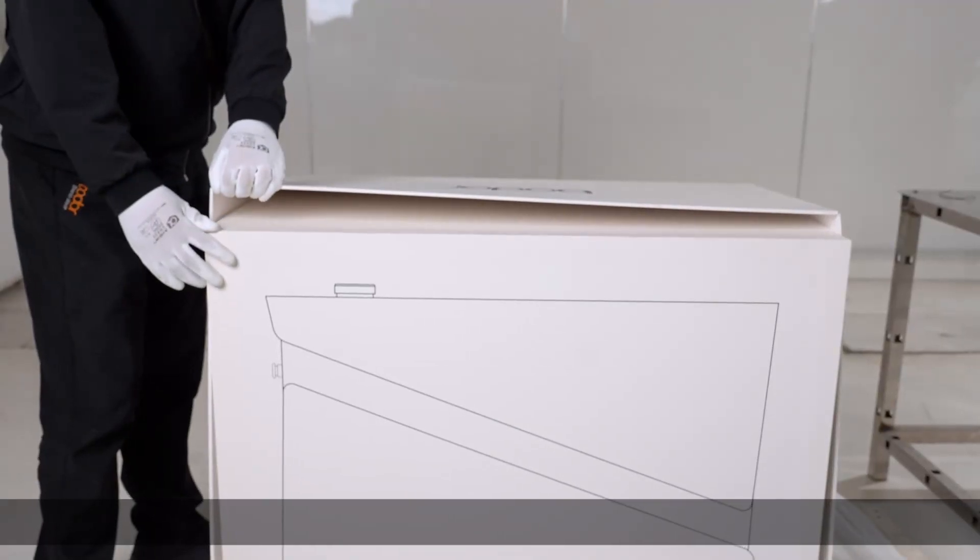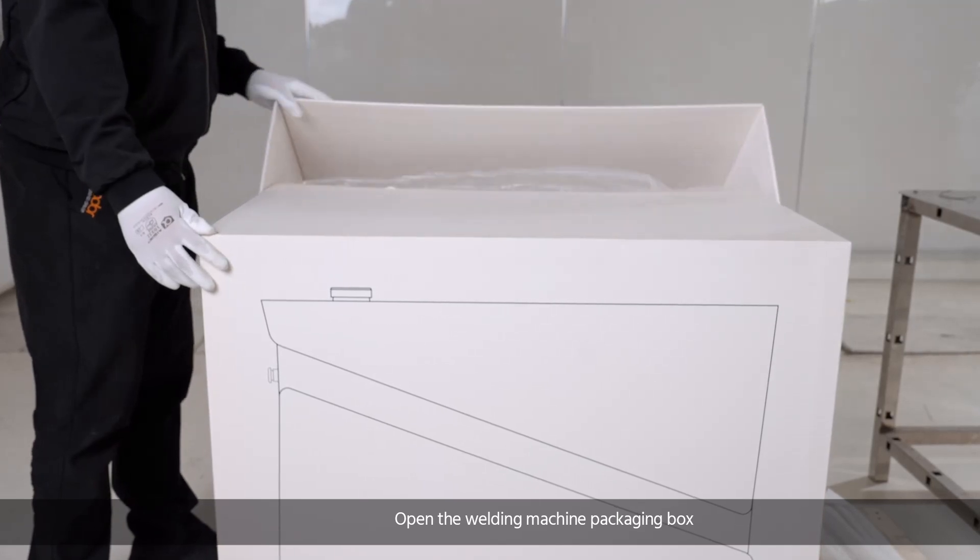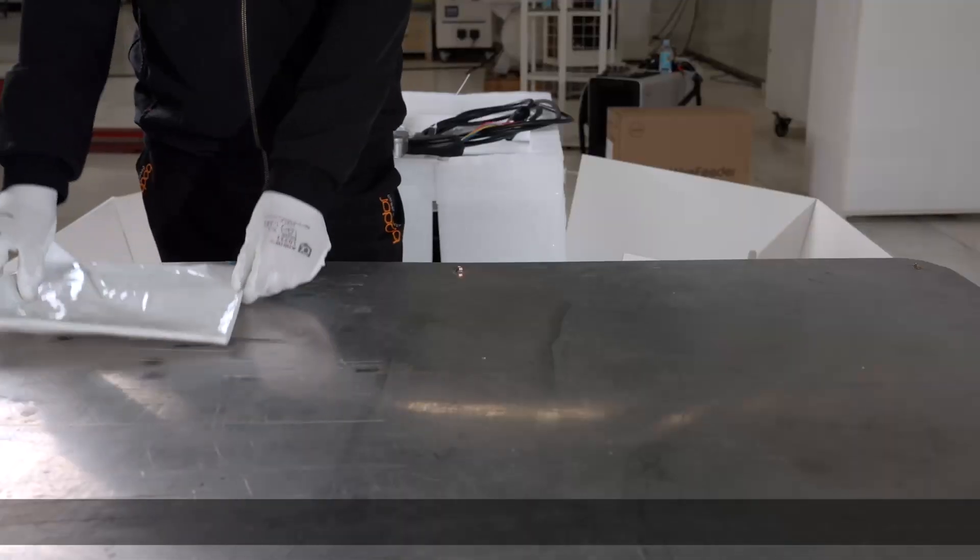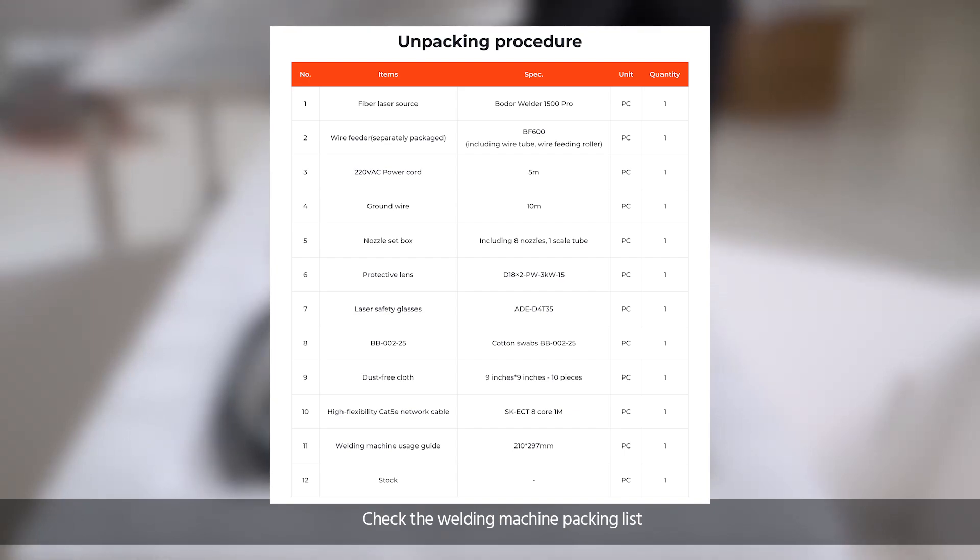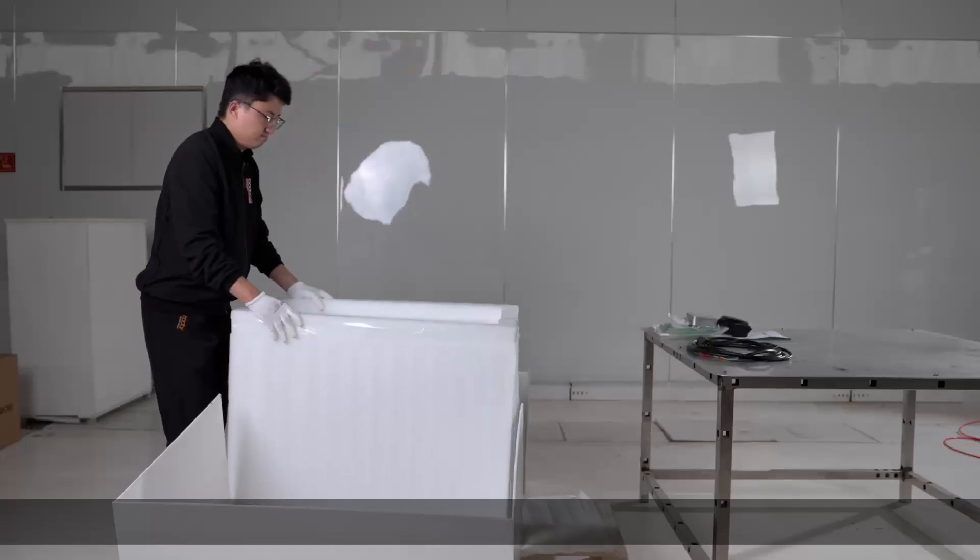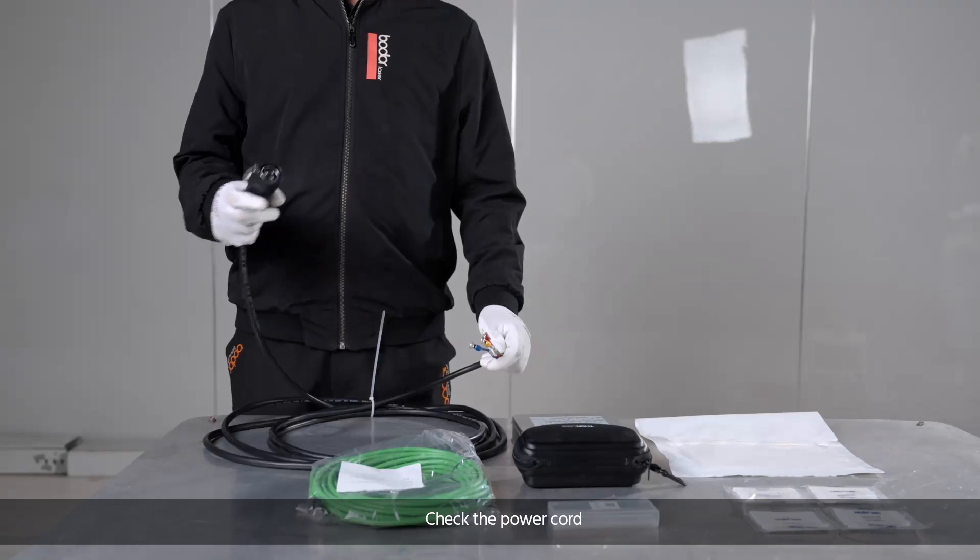Open the welding machine packaging box and check the welding machine packing list. Take out the anti-shaking foam and check the power cord.